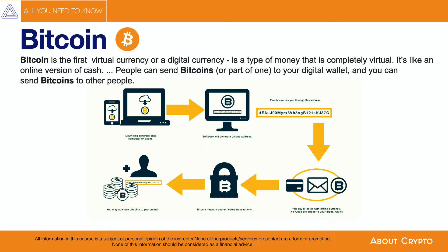Hello everyone and welcome to our lecture about Bitcoin. Bitcoin is a digital form of cash, but unlike the normal currencies you're used to, there is no central bank controlling it. Instead, the financial system in Bitcoin is run by thousands of computers distributed around the world called nodes. Anyone can participate in the ecosystem by downloading open source software on their laptop or phone.